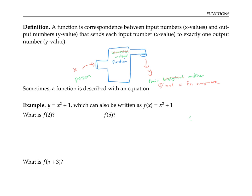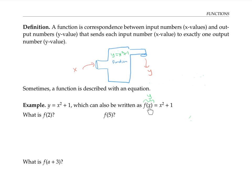Most of the time, we'll work with functions described with equations, not in terms of mothers. For example, we can have the function y equals x squared plus one. This can also be written as f of x equals x squared plus one. Here, f of x is function notation that stands for the output value of y. Notice that this notation is not representing multiplication — we're not multiplying f by x. Instead, we put in a value for x as input and get out a value of f of x, or y.